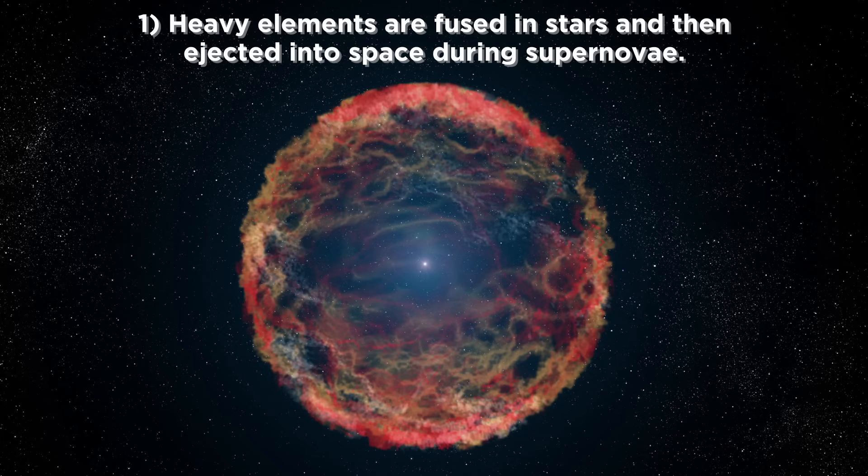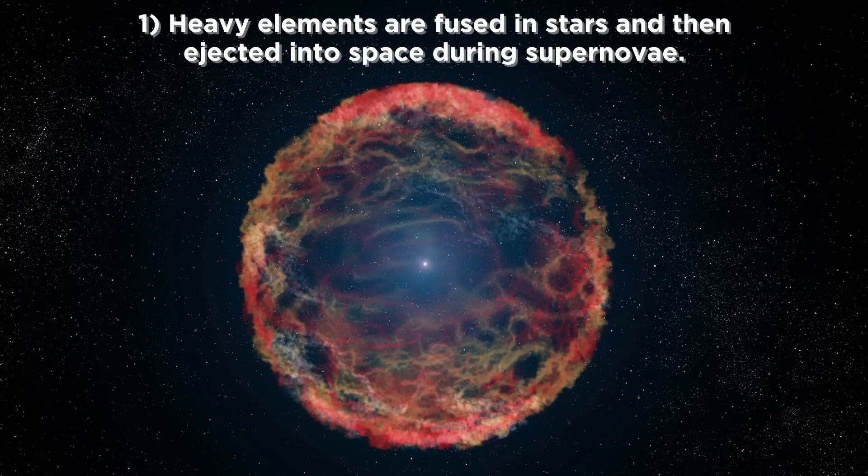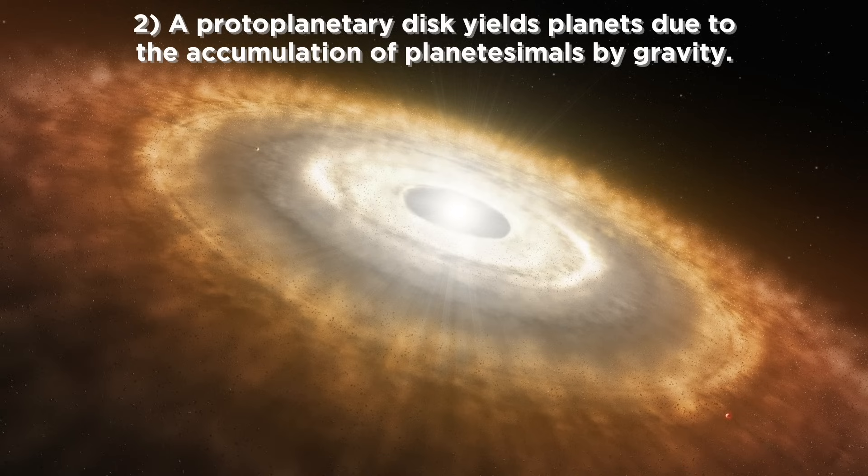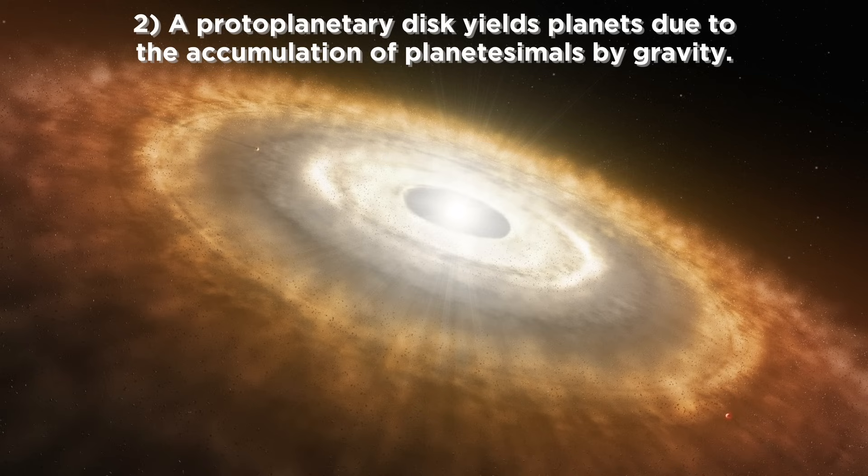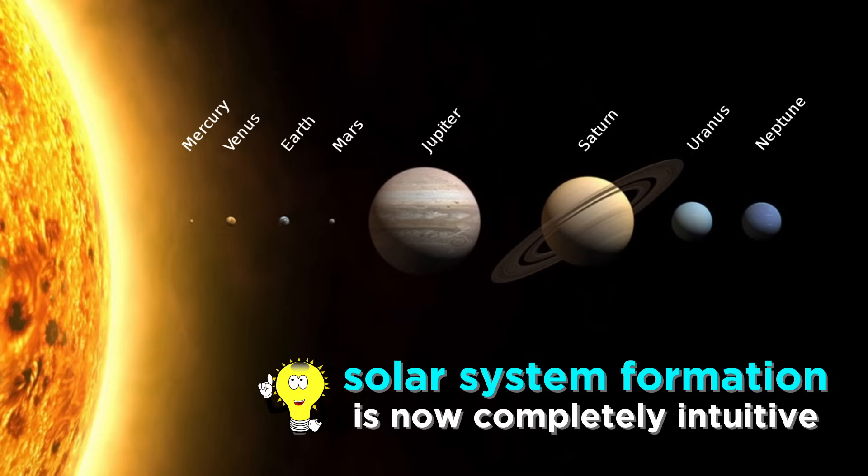The first of these processes is the fusion of heavy elements inside high mass stars, which are then ejected into the interstellar medium during a supernova. The second is the accretion of interstellar gas and dust to form a protoplanetary disk, which then slowly accumulates into large spherical objects at varying orbital radii purely by gravity. Now, the spontaneous formation of the solar system makes just as much sense as any other knowledge we can infer from our immediate surroundings.